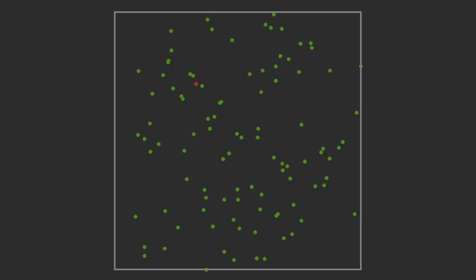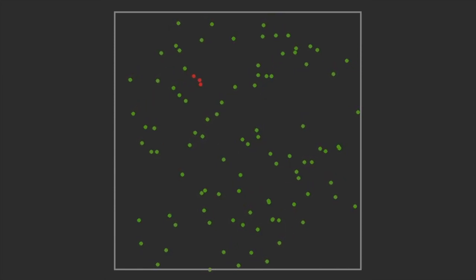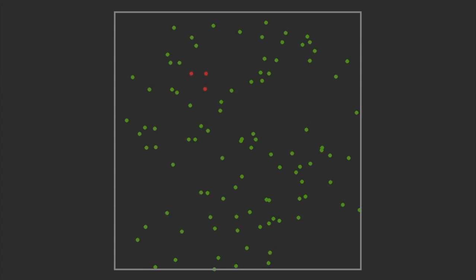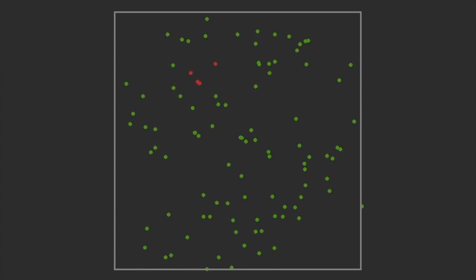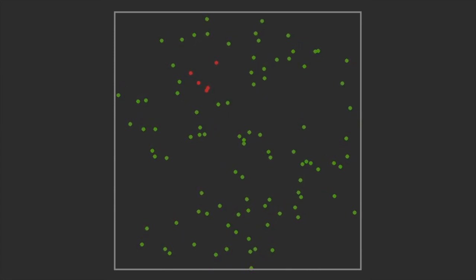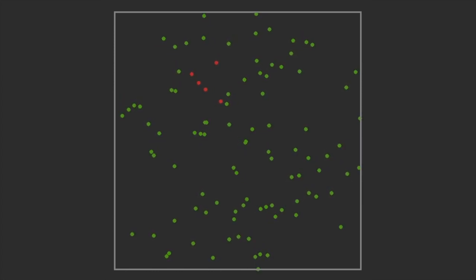The next simulation shows social distancing and how it can reduce the spread by a very large factor if people decide to stay home and not interact with too many people. If you compare this to the rate of spread in the first simulation, it's not difficult to understand why the government is stressing on social distancing.